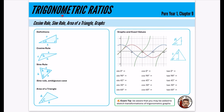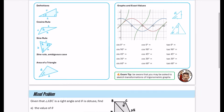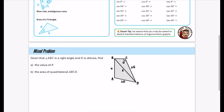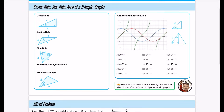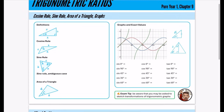We are on to chapter 9, which is trigonometric ratios. A lot of this is from GCSE — it's really just remembering some of these key facts, and then I will be doing a mixed problem on the next slide.